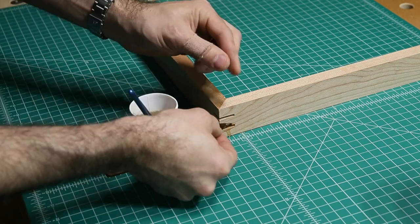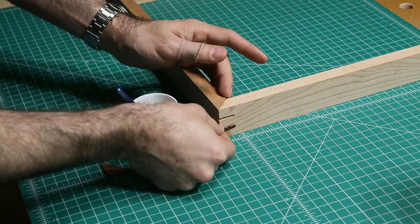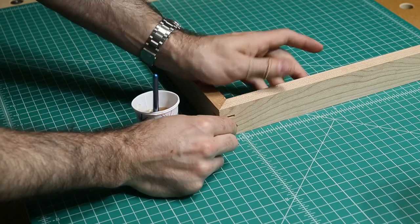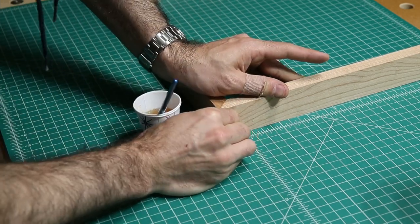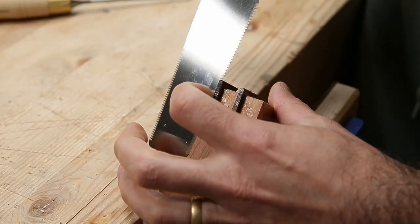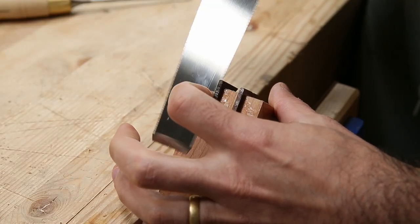So I'll use hide glue for these as well. And the trick with these splines to making them look good is to push really hard when you're getting these to seat. Because if you have a gap between the spline and the actual frame, it's going to look really bad.